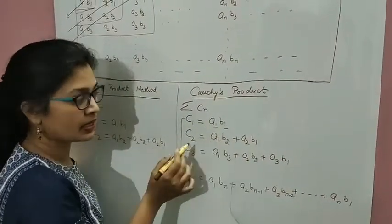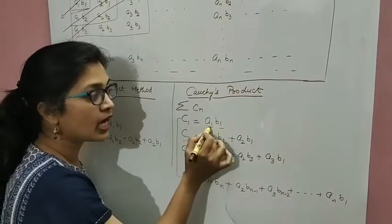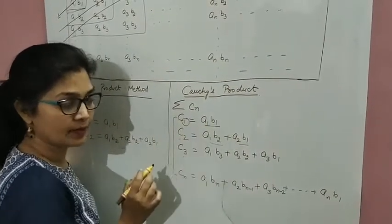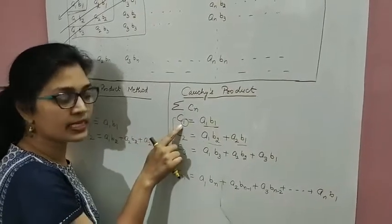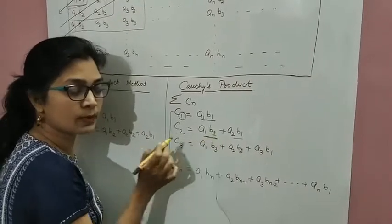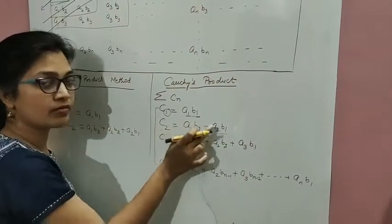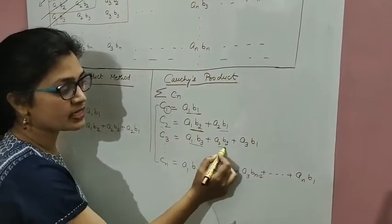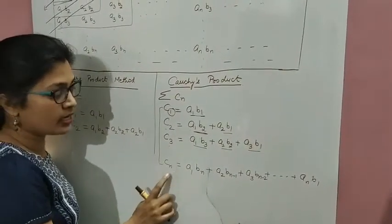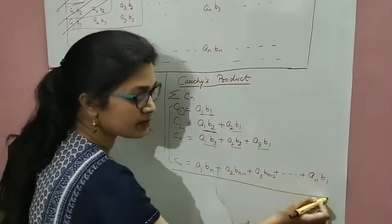You can observe one important thing in the Cauchy product: the sum of the subscripts in every term of c1, c2, c3 is always one greater than the subscript of c. For example, in c1, 1+1=2, which is one greater than 1. In c2, the subscripts sum to 3, which is one greater than 2. Similarly, in c3 all subscript sums are 4, which is one greater than 3. This pattern holds for cn as well.